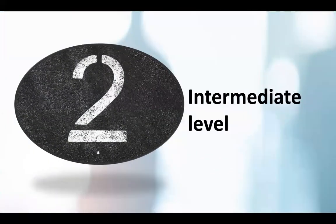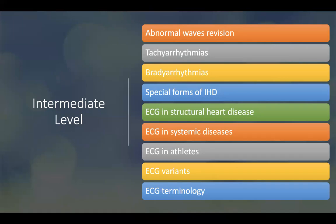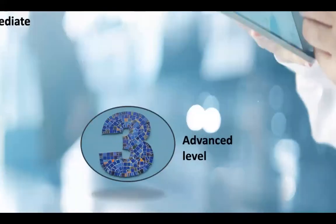At the intermediate level, we will do an abnormal waves revision and go in depth into the chapter on arrhythmias, including tachyarrhythmias and bradyarrhythmias. You will be able to diagnose challenging forms of ischemic heart disease, learn ECG in structural heart disease, ECG in systemic diseases such as systemic lupus and renal failure, ECG in electrolytes disorders, ECG variants, and finally challenging ECG terminology.